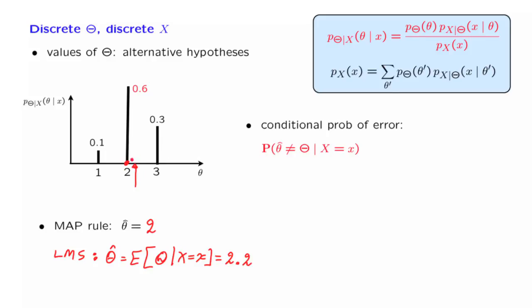If in this example, we use the MAP rule, and we make an estimate of 2, there is probability 0.6 that the true value of theta is also equal to 2. And we are fine. But there is a remaining probability of 0.4 that the true value of theta is different than our estimate. So there's probability 0.4 of having made a mistake.